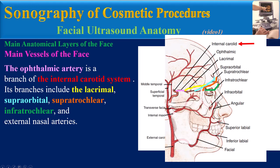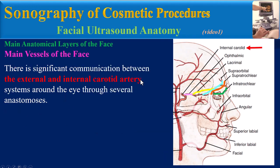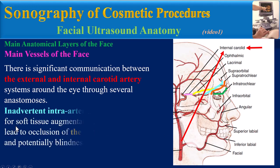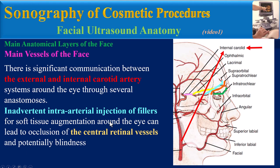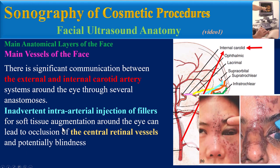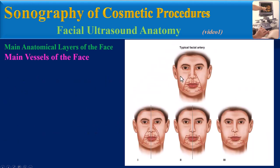The ophthalmic artery is a branch of the internal carotid system. Its branches include the lacrimal, supraorbital, supratrochlear, infratrochlear, and external nasal arteries. There is significant communication between the external and internal carotid artery systems around the eye through cerebral anastomoses. It must be emphasized that inadvertent intraarterial injection of fillers for soft tissue augmentation around the eye can lead to occlusion of the central retinal vessels and potentially blindness.